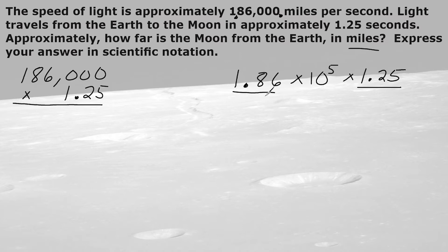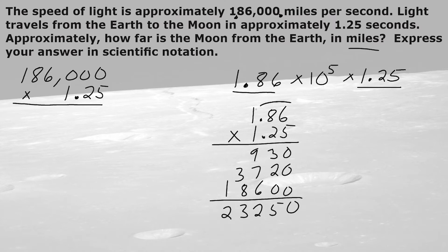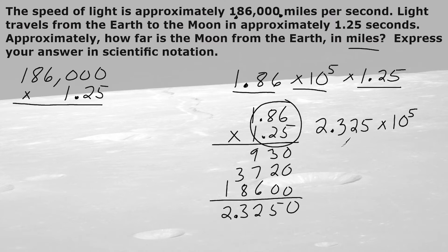Let's go ahead and multiply 1.86 by 1.25. Working through the multiplication, we get a result of 2.325, with a total of four decimal place values. We can truncate or drop any ending zeros, and we just bring down our 10 to the fifth power. So the approximate distance from the Earth to the Moon is 2.325 times 10 to the fifth power.